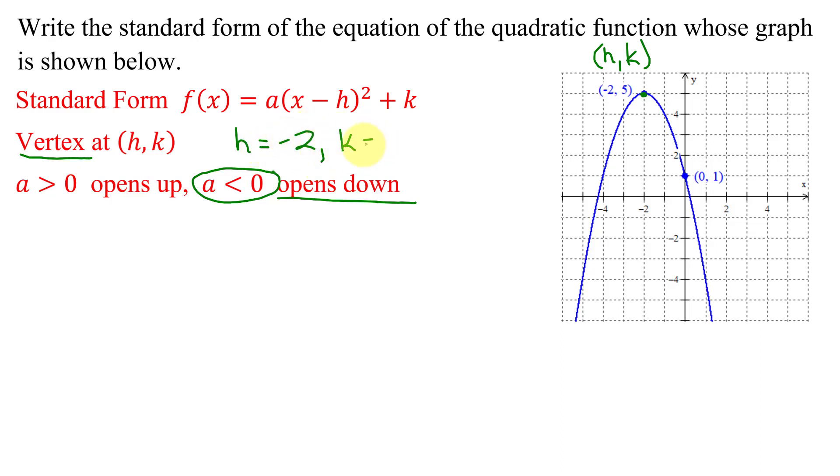k, the y value of the vertex, is at positive 5. So plugging these values into the equation, I get f of x equals a, I don't know what a is yet, times x minus h, x minus a negative 2, all squared, plus k, and k was 5.